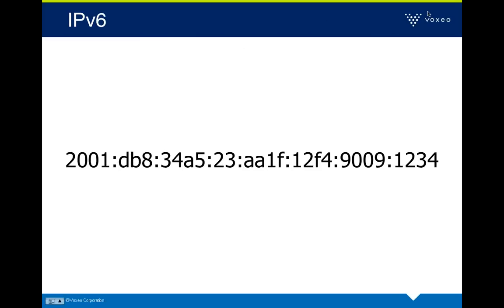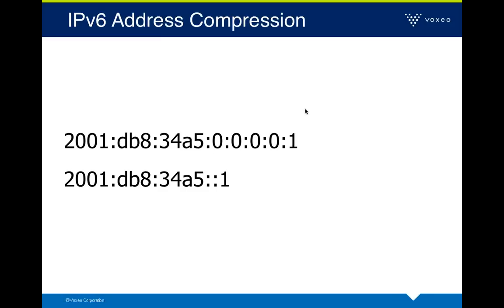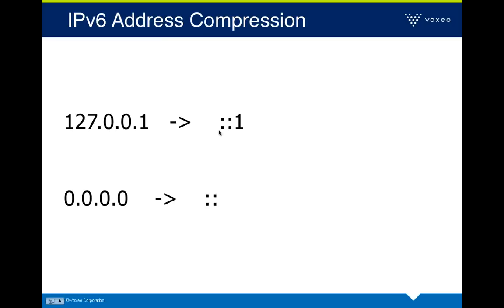Another interesting characteristic of IPv6 is that you don't always have eight blocks. You can have a much smaller address. Wherever you have a bunch of zeros, you can put in a double colon to compress. So the first and second lines of an address shown on screen are equivalent. The loopback address in IPv4 is 127.0.0.1; in IPv6, that's simply ::1 — a much shorter address.